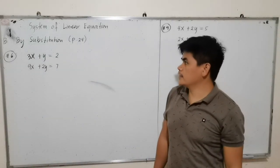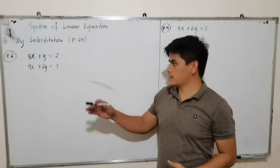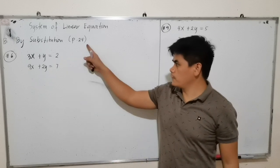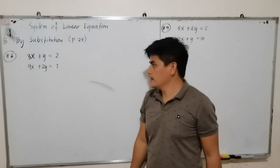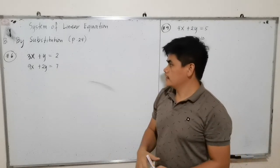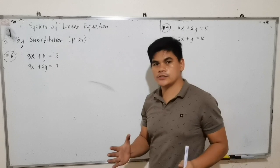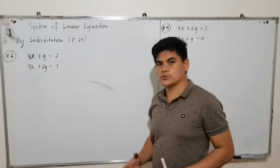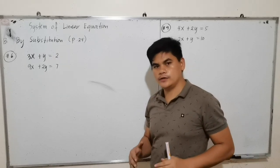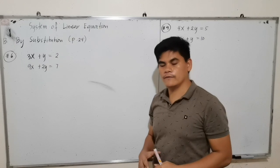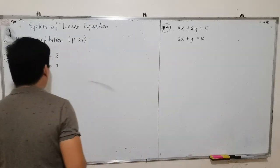Another example on systems of linear equations, solved by substitution. This example is found in your module, page 24. I chose number 6 and number 9. The first is 3x plus y is equal to 2, and 9x plus 2y is equal to 7. Since this is substitution, we are going to use the equation which is easier to get the value of a variable.